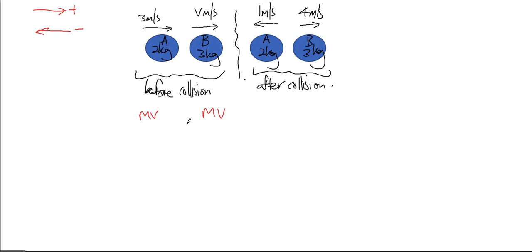Using this formula p equals mv, I'm going to find what is the momentum before collision, the total momentum. According to the law of conservation of momentum, the total momentum before collision is equal to the total momentum after collision.